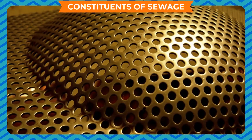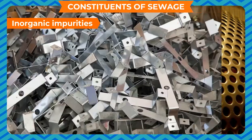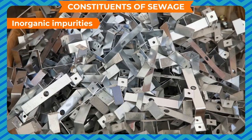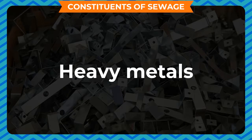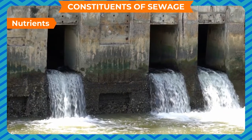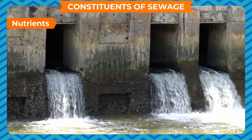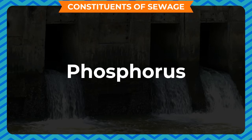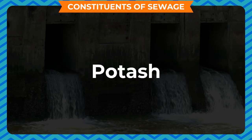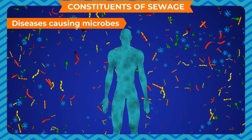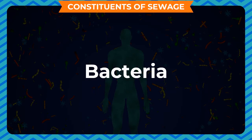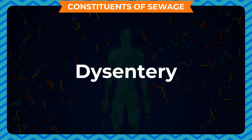Inorganic impurities are in the form of phosphates, nitrates and heavy metals. Sewage also includes nutrients like nitrogen, phosphorus and potash. Disease-causing microbes such as bacteria which cause typhoid, cholera and dysentery are present in the sewage.